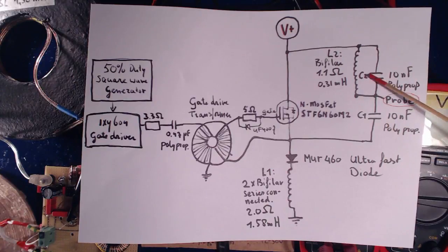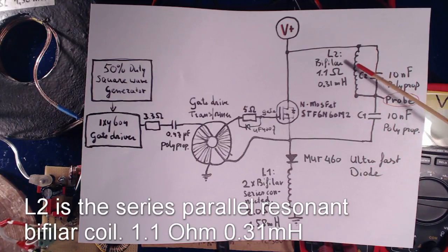C1 and C2 are 10 nF, again, polypropylene capacitors. And here's L2, my bifilar, 1.1 ohm, 0.3 millihenries resonance bifilar Tesla coil.